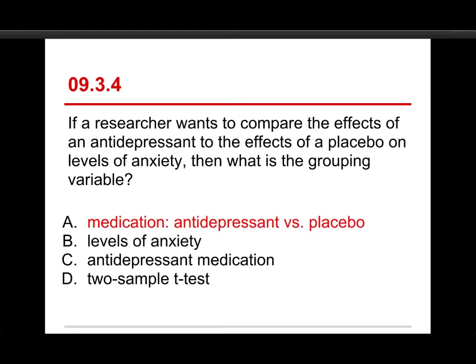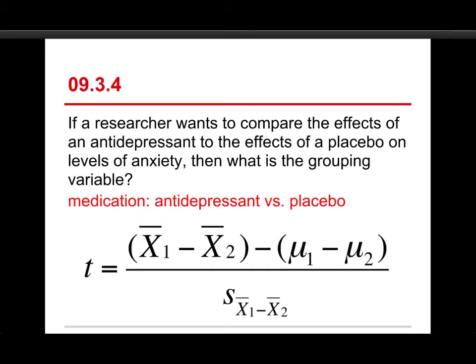Well, the answer here is A, medication, antidepressant versus placebo. Very quickly, levels of anxiety is the outcome variable. It's the dependent variable. Antidepressant medication is simply one of the levels within the factor of medication. And a two-sample t-test is the inferential test we would use to analyze the results.